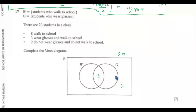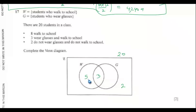We are told that eight walk to school. So if eight walk to school and we already have three in the intersection, the remaining five go in the walk-to-school only region, because the whole circle should add up to eight. So eight minus three equals five.